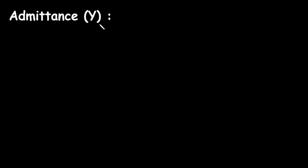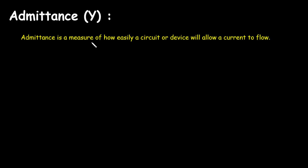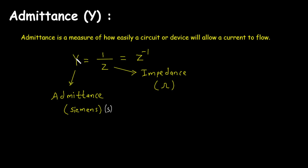Admittance is a measure of how easily a circuit or device will allow an alternating current to flow. Admittance is given by Y = 1/Z. Simply, we can say that admittance is the reciprocal of impedance.